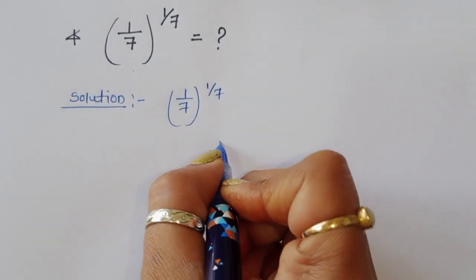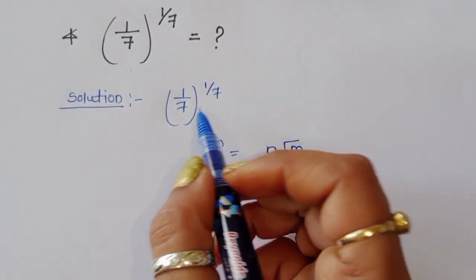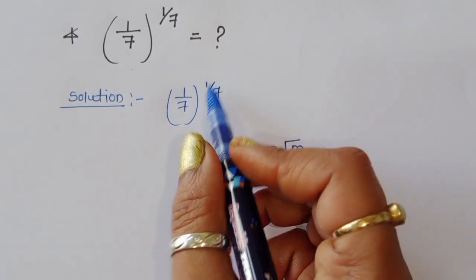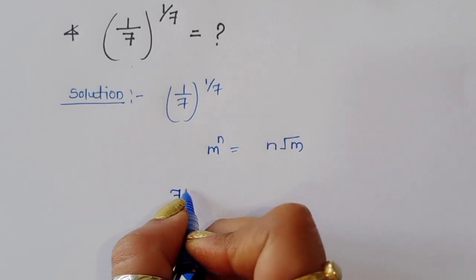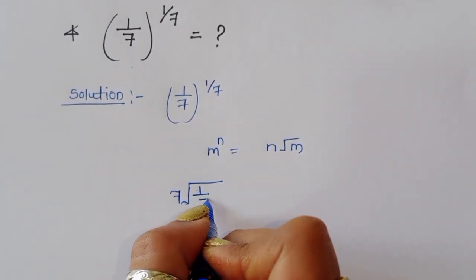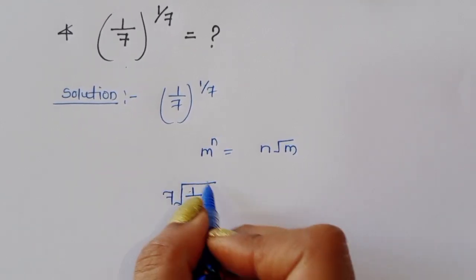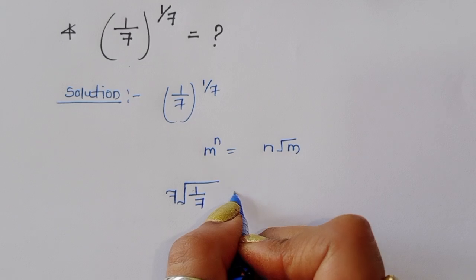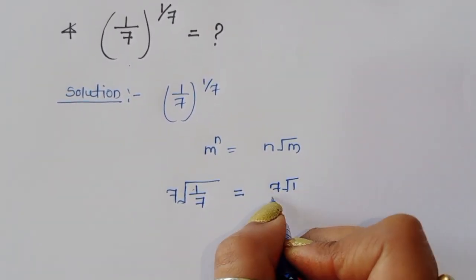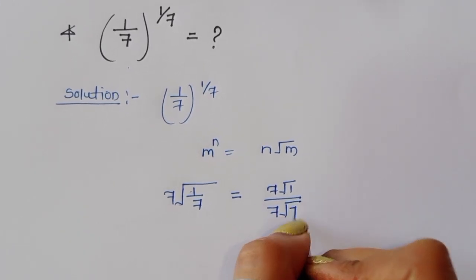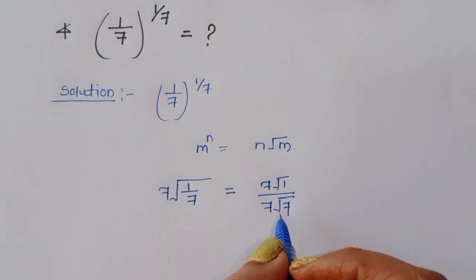So (1/7)^(1/7) is our question. We know that m^(1/n) equals the nth root of m. So here, with 1/7 raised to the power 1/7, we can write this as the 7th root of (1/7). Now, separating the terms inside, we get the 7th root of 1 divided by the 7th root of 7.